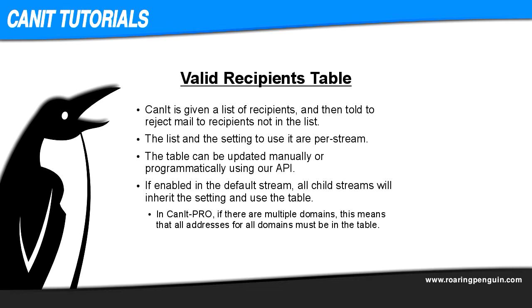If neither a user lookup nor a verification server will work, CANET has another option called the valid recipients table. A list of all recipient addresses is imported into CANET, then we activate a setting that tells CANET to reject mail to recipients not listed in the table. This is a per-stream setting. You can enable it in the default stream so that all other streams inherit it, or you can enable it only in certain streams that need it and not others. The table can be kept up to date manually or programmatically by using our application programming interface, our API.